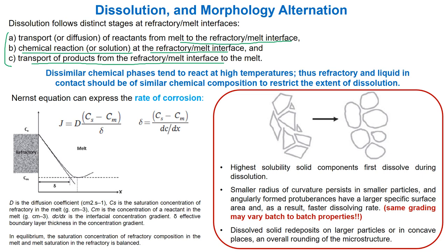Because of that, if the environment is basic, we have to pick a basic refractory. The Nernst equation can express the rate of corrosion, where D is the diffusion coefficient, Cs is the saturation concentration of refractory in the melt, Cm is the concentration of a reactant in the melt, dC/dx is the interfacial concentration gradient, and δ is the effective boundary layer thickness.